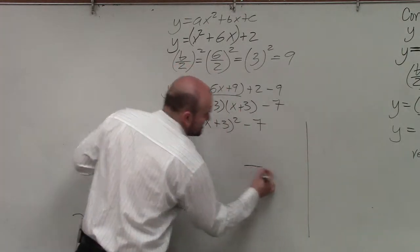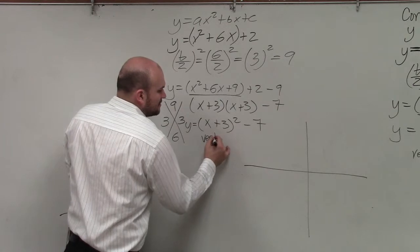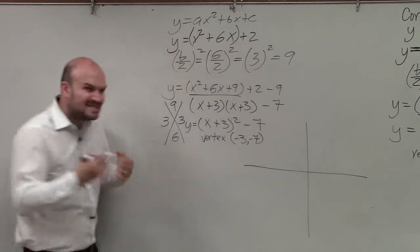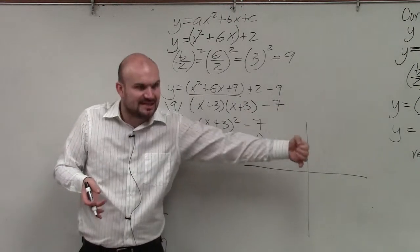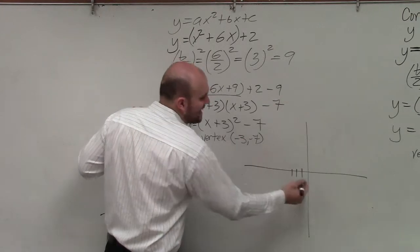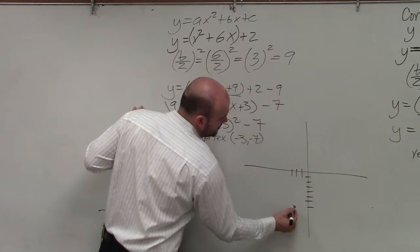So to go ahead and graph that, I basically now know my vertex is at negative 3, negative 7. Why is it at negative 3 again? Because remember, it's always the opposite, right, with your h. So I go to negative 3, and then down 7. 1, 2, 3, 4, 5, 6, 7.